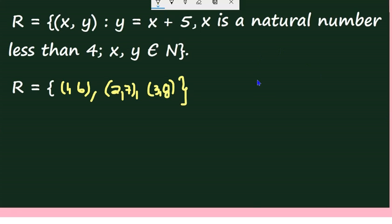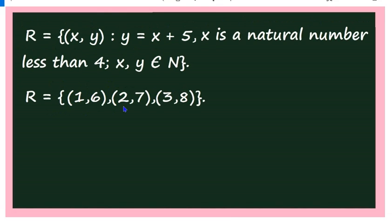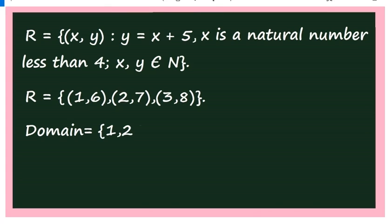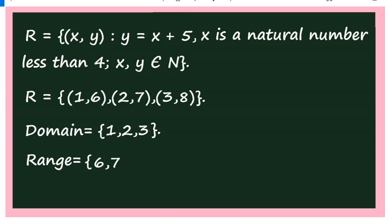Once you know the roster form, you can write the domain and range very easily. The elements are (1,6), (2,7), and (3,8). The domain is the collection of all first elements: {1, 2, 3}. The range is the collection of all second elements: {6, 7, 8}.